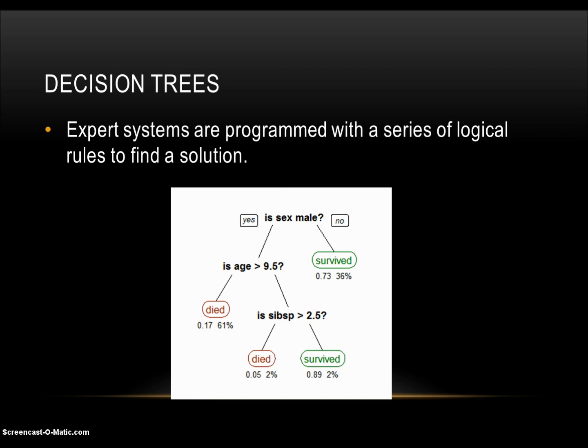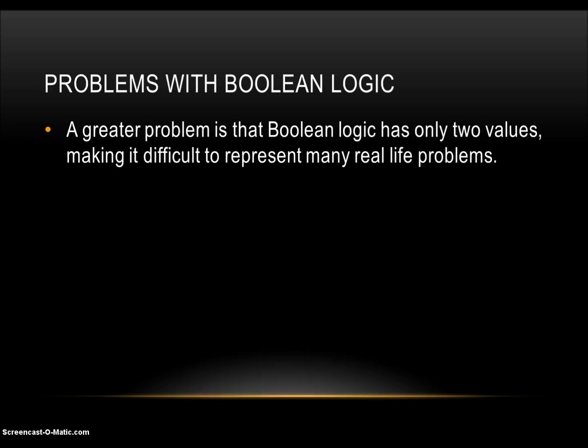Expert systems are programmed with a series of logical rules to find a solution. Very basic expert systems can use Boolean logic, or decision trees, to come to conclusions. Boolean logic has two possible values — true and false, yes or no, one and zero, and so on. The meaning of the two values is not relevant, only what the outcome of the two values is. You can see an example where it goes down the tree based on whether or not it meets the criteria. A greater problem is that Boolean logic has only two values, making it difficult to represent many real-life problems.